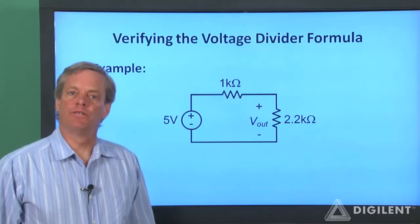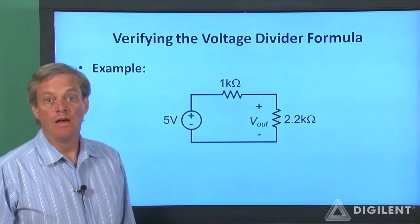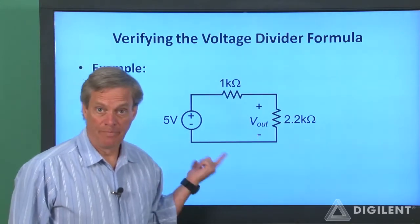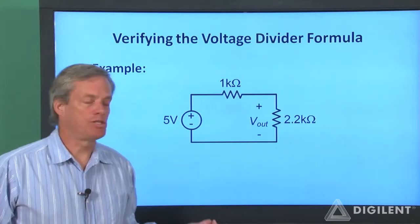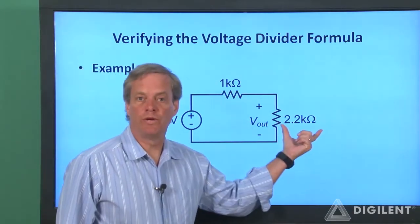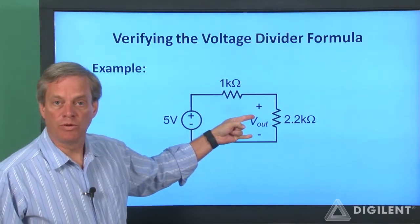The first thing we'll do in this video is simply to make a measurement to verify that the voltage divider formula works. The circuit we'll use is shown here. We have a voltage source of 5 volts applied across a series combination of a 1 kilohm and a 2.2 kilohm resistor. We're going to measure the voltage across the 2.2 kilohm resistor.